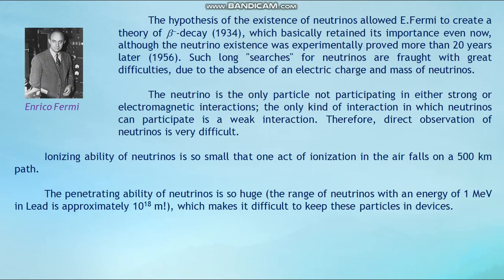The hypothesis of the existence of neutrinos allowed Enrico Fermi to create a theory of beta minus decay in 1934, which has basically retained its importance even now. The existence of the neutrino was experimentally proved more than 20 years later, in 1956. Such long searches for neutrinos were fraught with great difficulties due to the absence of electric charge and mass of neutrinos.